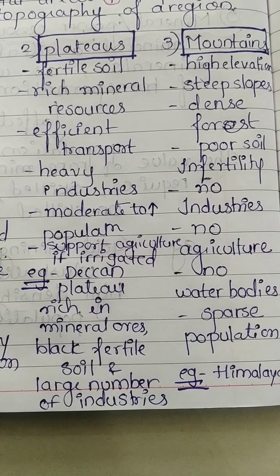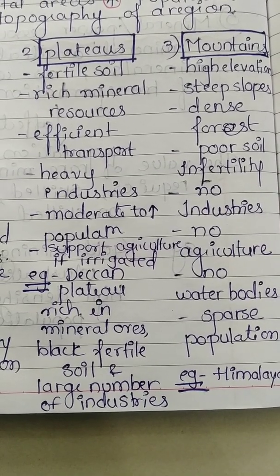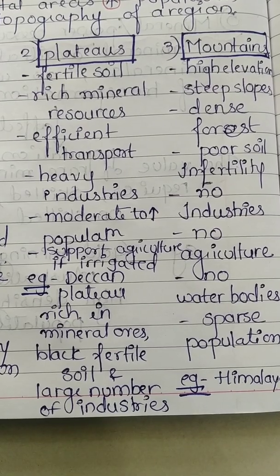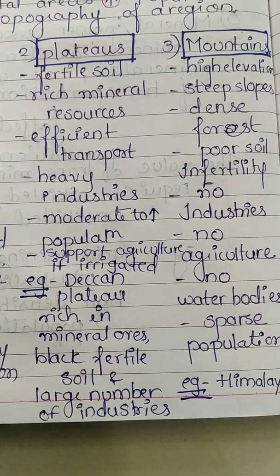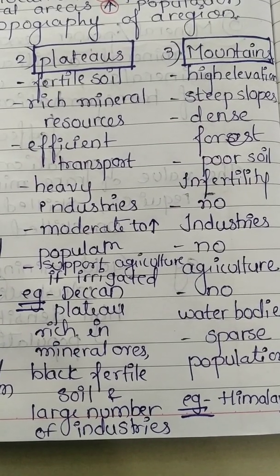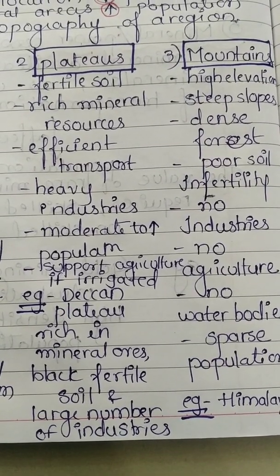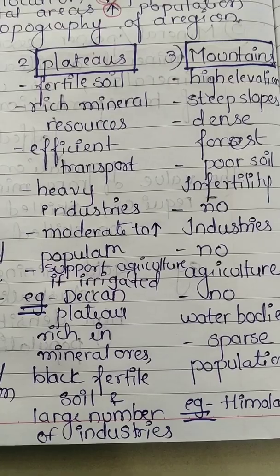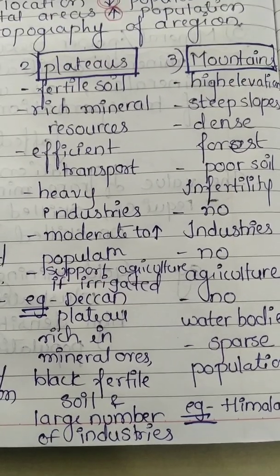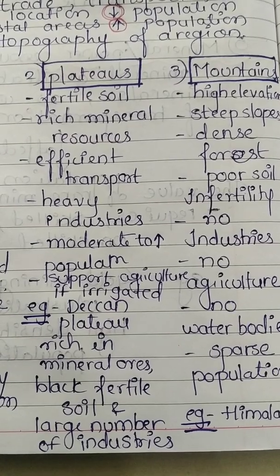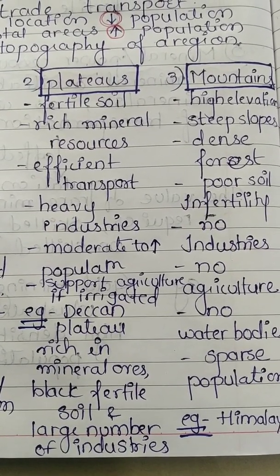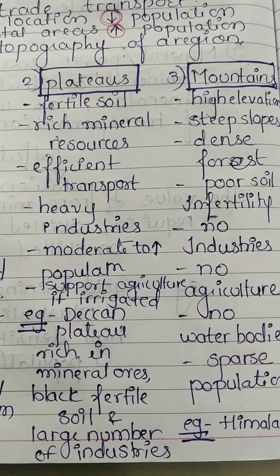Plateaus always have a flat surface area — they don't have any peaks and they don't look like hills. The area at the top of a plateau is always flat. Even the soil in plateaus is as fertile as that of plains, and plateaus are more rich in mineral sources.